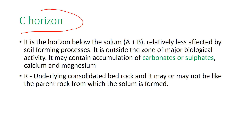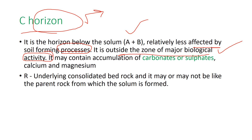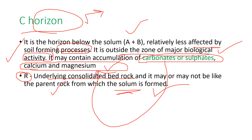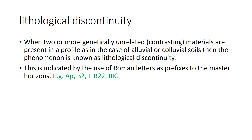The C horizon lies below both A and B horizons and is relatively less affected by soil-forming processes, being outside the zone of major biological activity. No humus formation or accumulation of clay, iron, or aluminium oxide takes place here, but it contains accumulation of carbonates, sulfates, calcium, and magnesium. The R layer is the underlying consolidated bedrock, which may or may not be the parent rock from which the soil is formed — it has no direct relationship with soil formation.